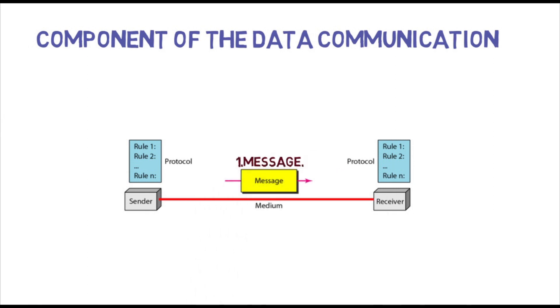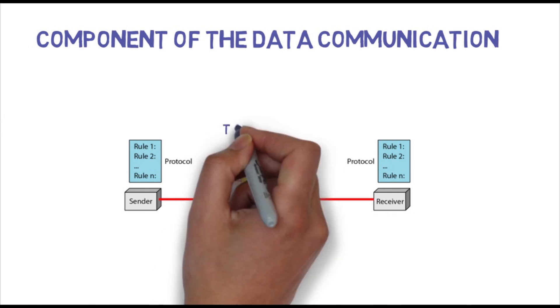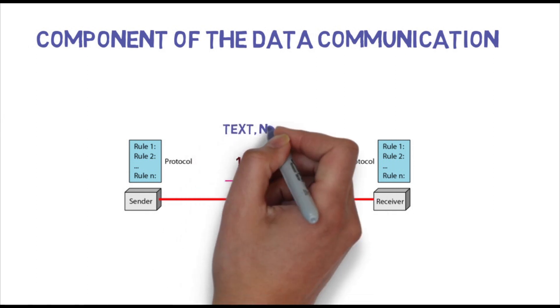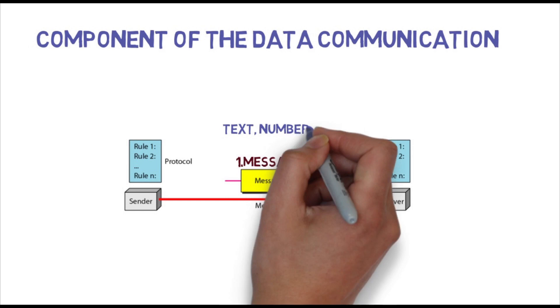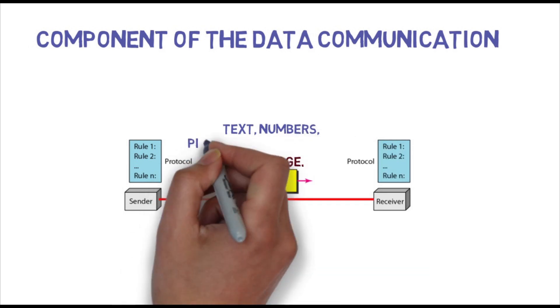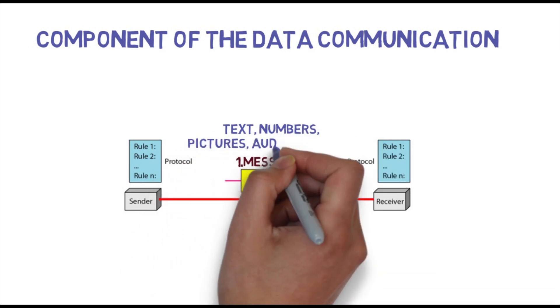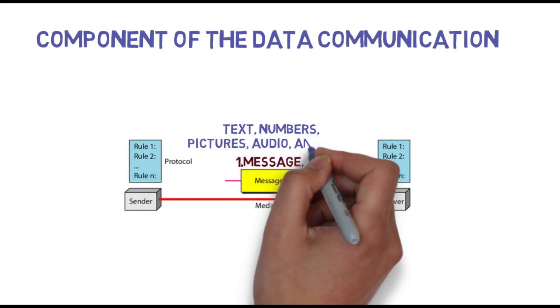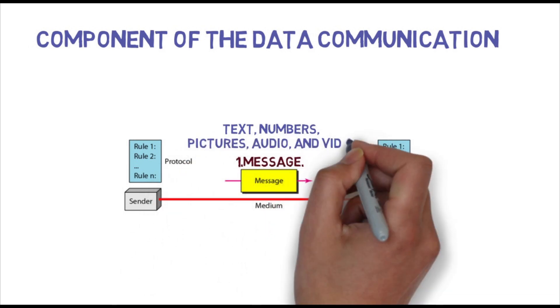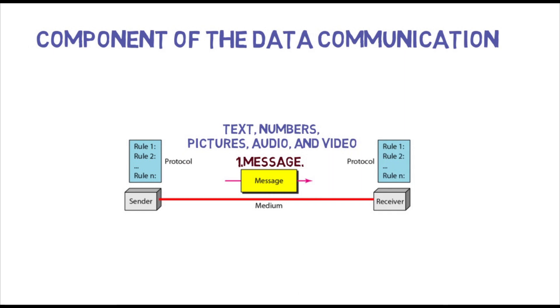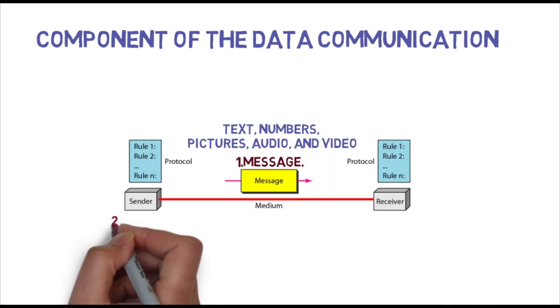Components of data communication. First: the message. The message is the information, or data, to be communicated. Popular forms of information include text, numbers, pictures, audio, and video.